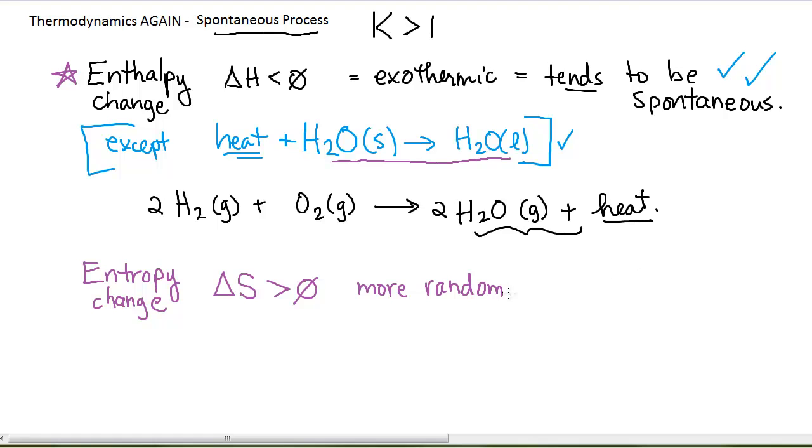A delta S greater than zero means that it is more random or more entropy. It's going to a bigger entropy, more random, more disordered, more unorganized. And this tends to be something that we see for spontaneous changes. If the delta S is positive, this tends to be spontaneous.